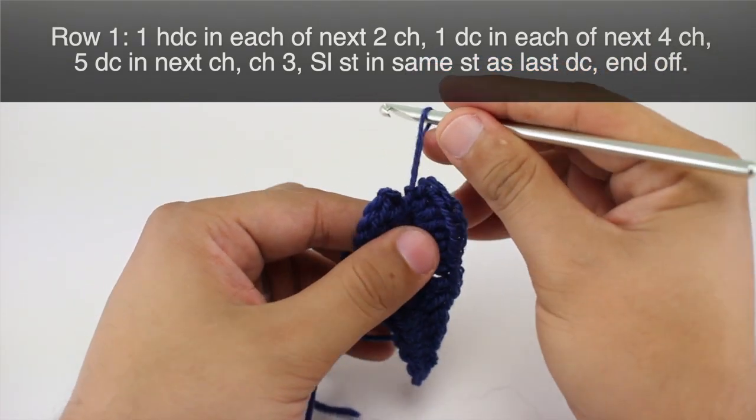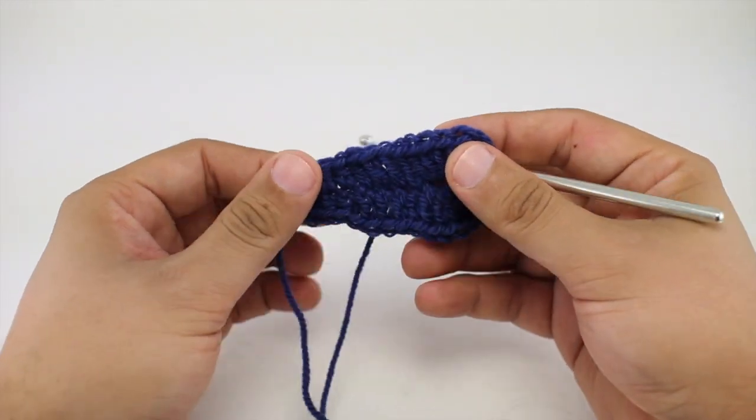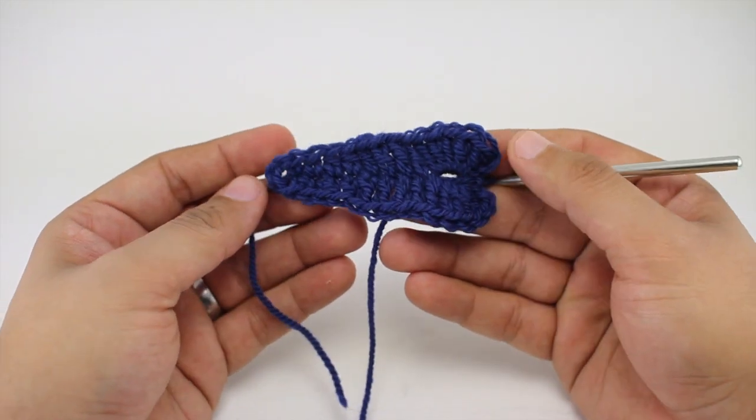Okay, so then you can break your yarn and fasten off. And then you've got this cool little leaf motif.